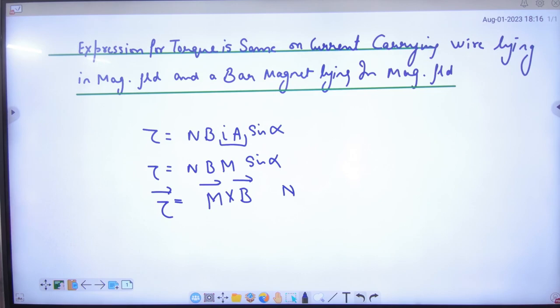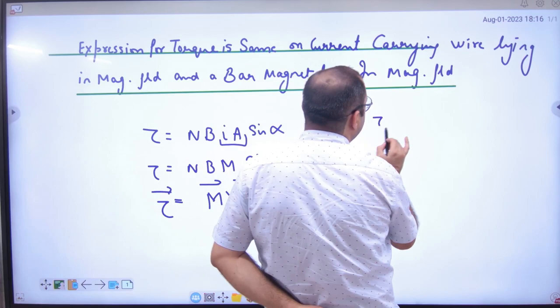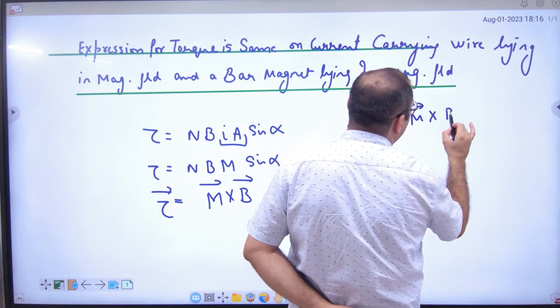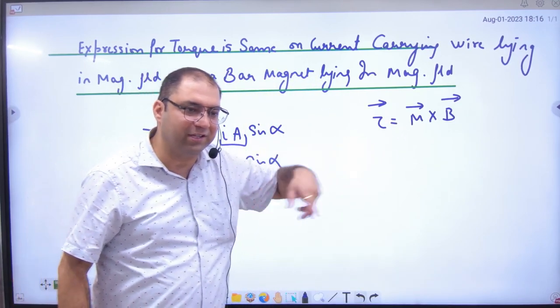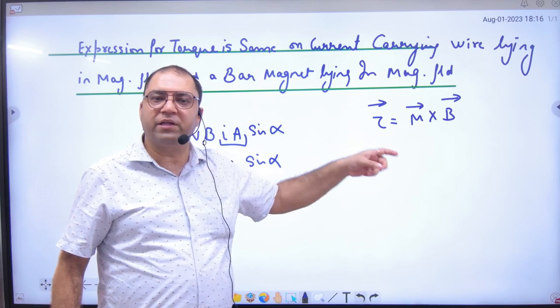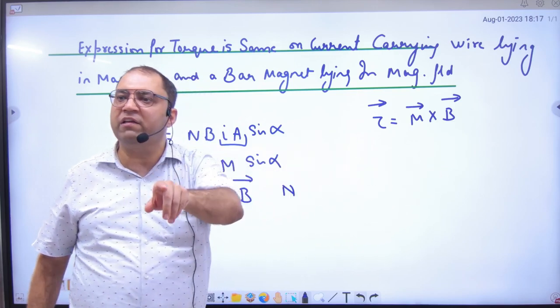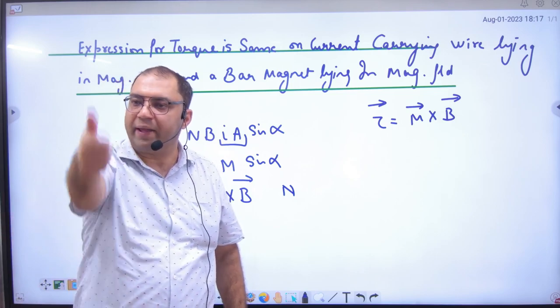So current carrying loop is this expression, and what we have done for a bar magnet in magnetic field - torque vector, same expression, the expression is the same for both. The difference is that in the bar magnet, capital M is calculated one way, and in the current carrying wire, capital M is calculated a different way.